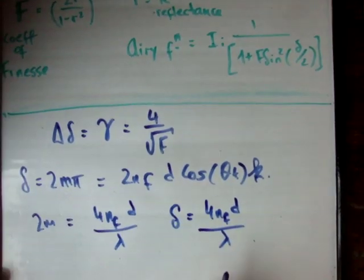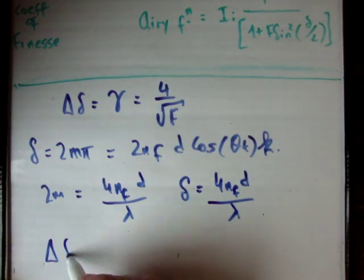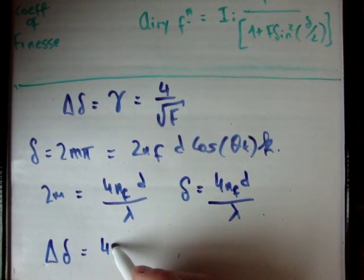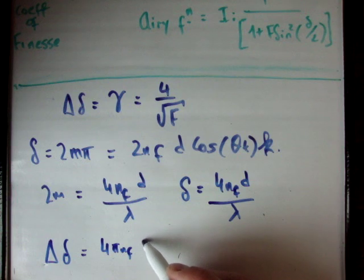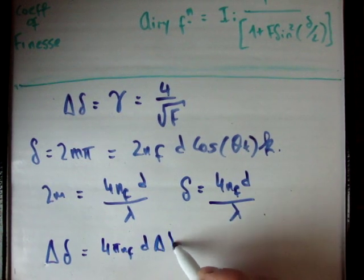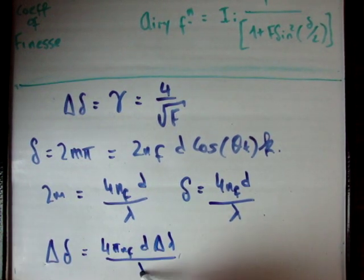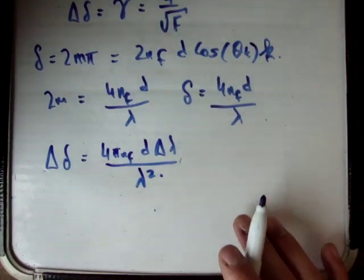And delta delta is equal to 4 pi n sub f d delta lambda over lambda squared.